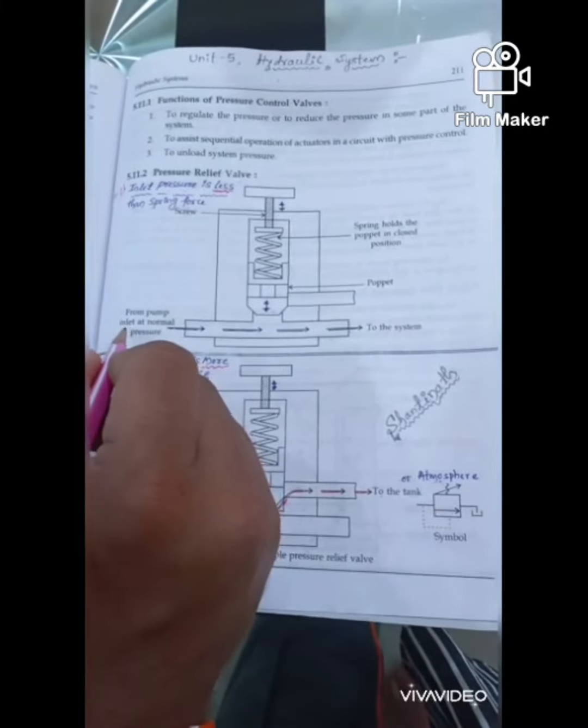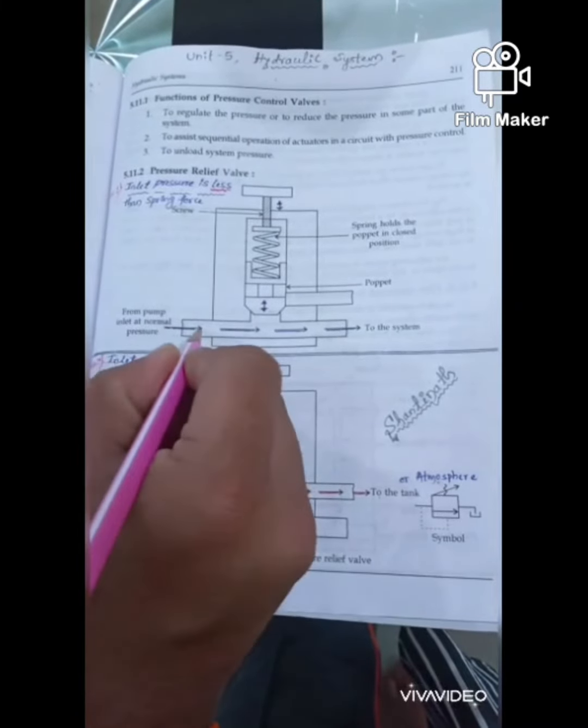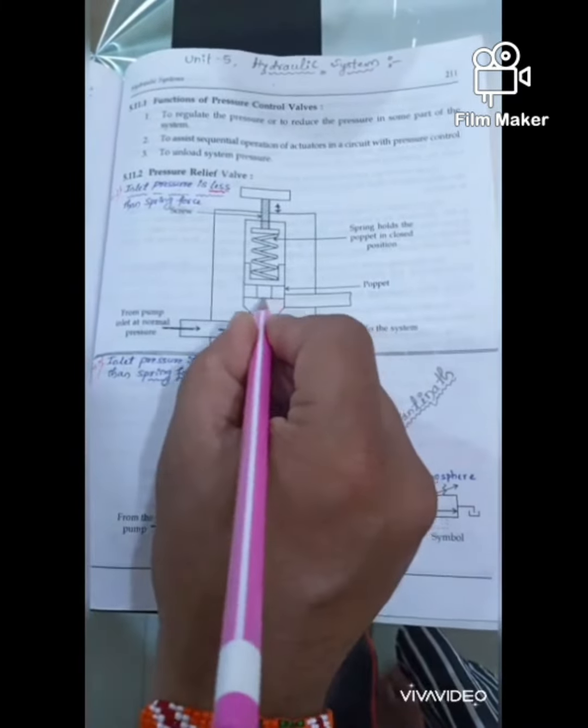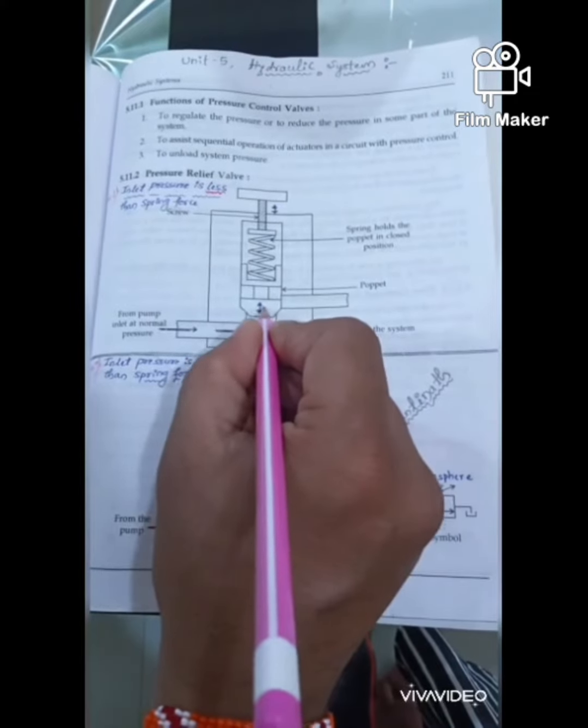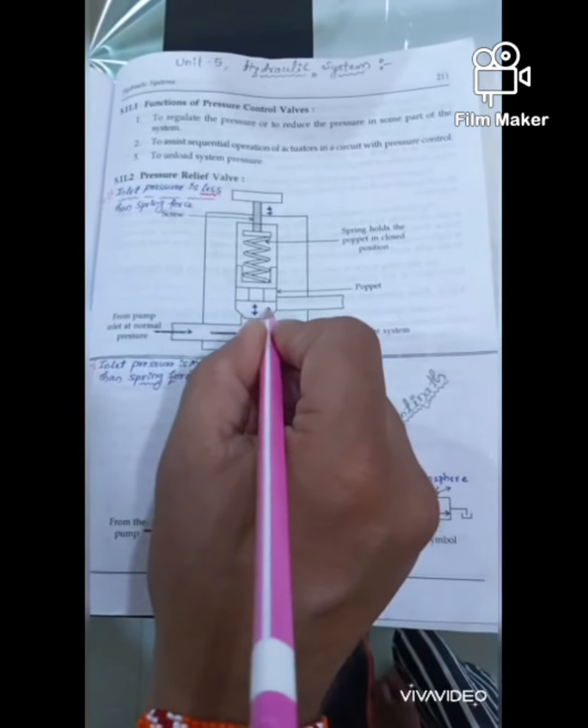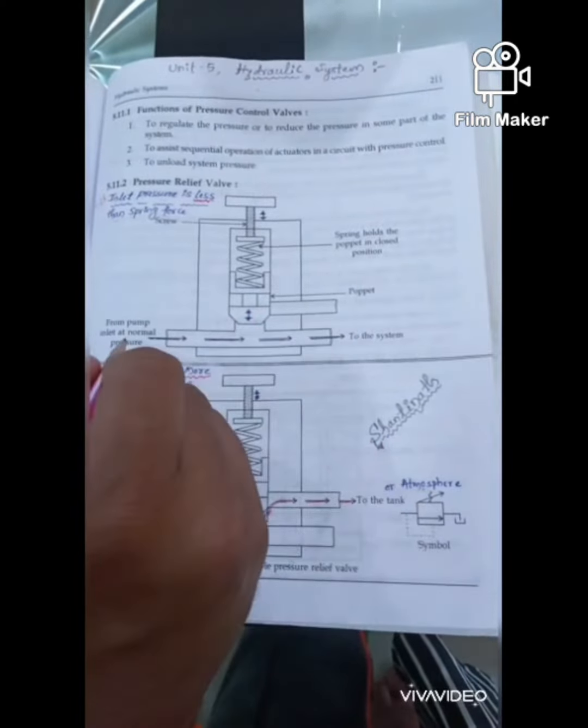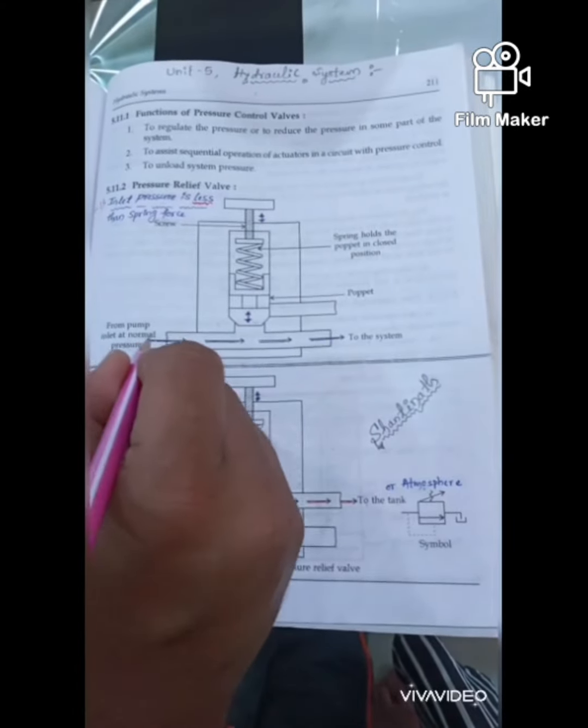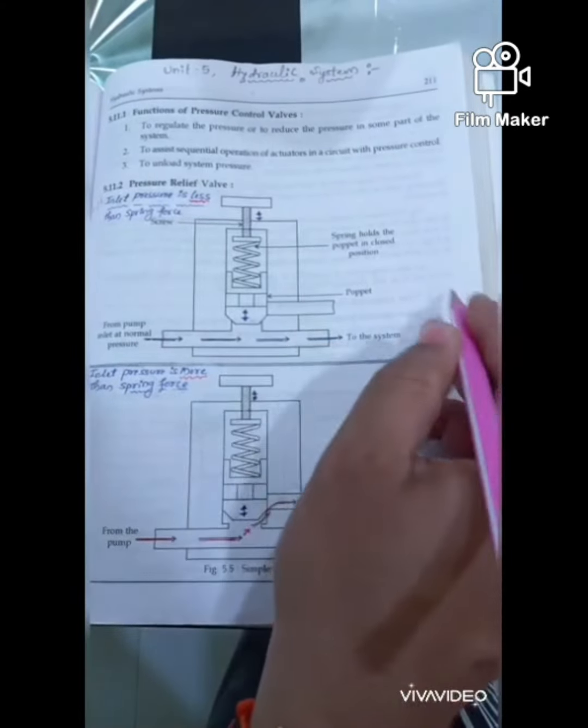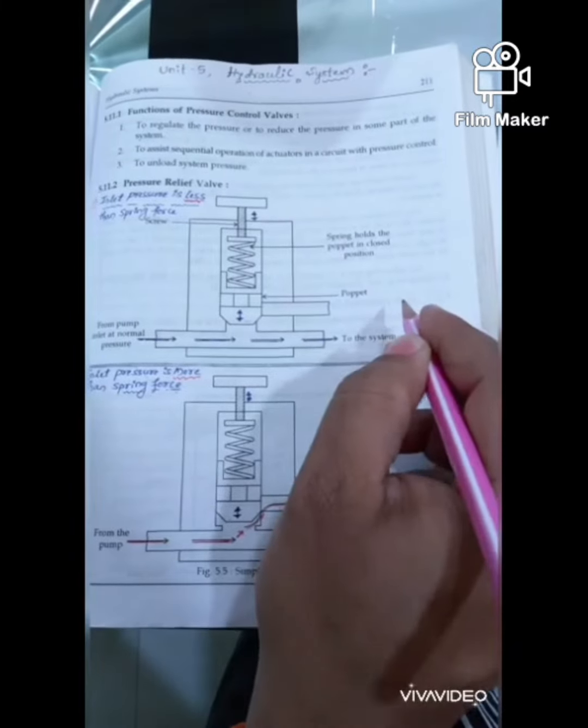If inlet pressure is less than the spring force, then the valve is closed, so that the flow of fluid is directly entering into the system.